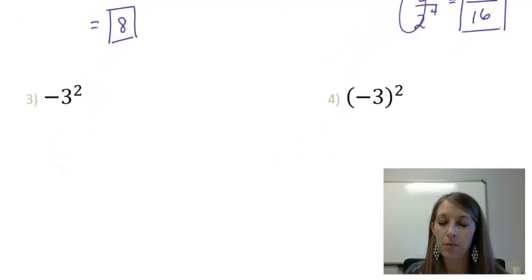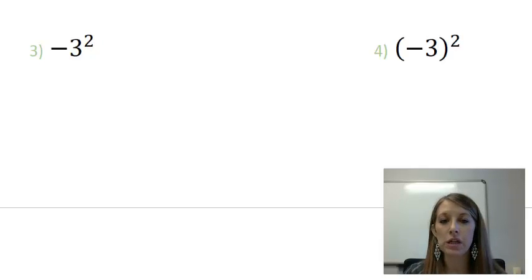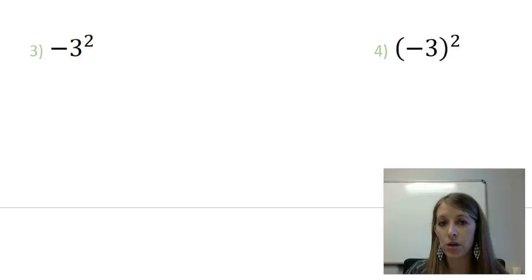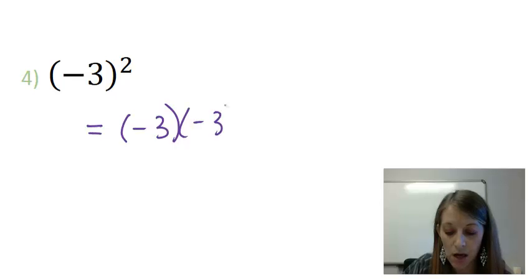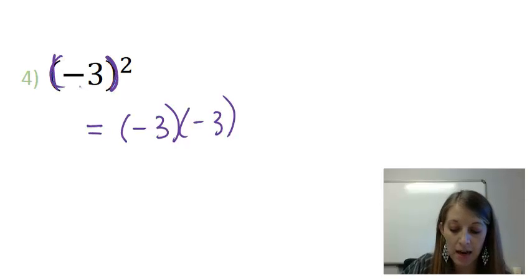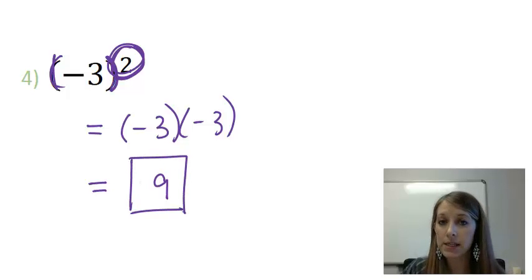Examples 3 and 4 are very similar, and I did that for specific reasons. The question is: will these give you the exact same answer, or different answers? The answer is they give you different answers. I'm going to work example 4 first. Example 4 says to take negative 3 times itself 2 times — the parentheses indicate that. Negative 3 times negative 3: a negative times negative gives you positive, and 3 times 3 gives you 9, so the answer is positive 9.